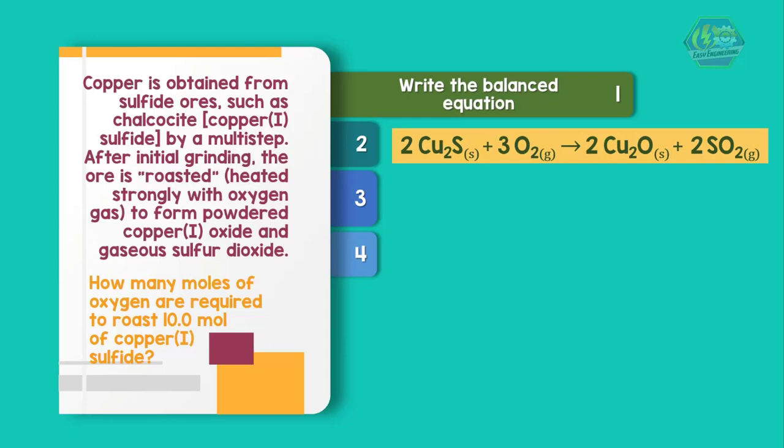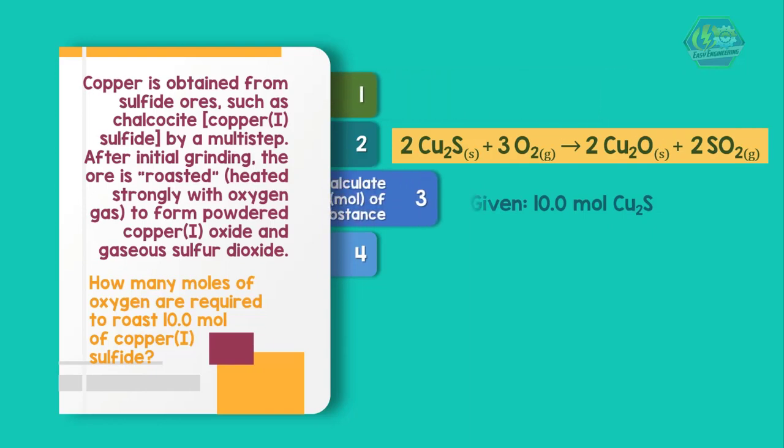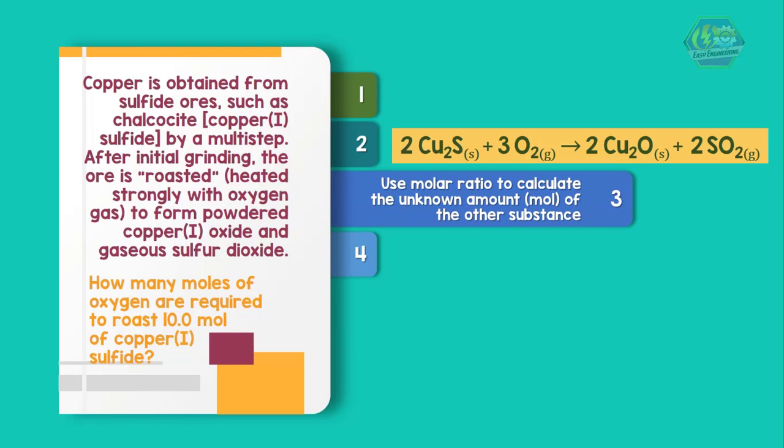First, we need to determine the balance equation: 2Cu2S + 3O2 → 2Cu2O + 2SO2. Second step, we already have the amount in moles of copper sulfide, so let us skip step two. We then use molar ratio to find the moles required of oxygen.